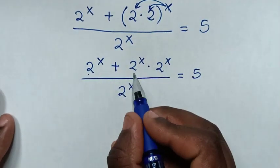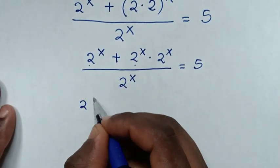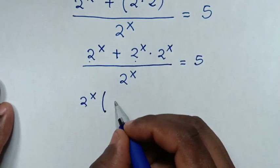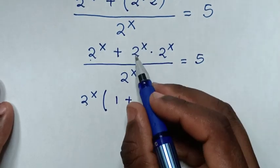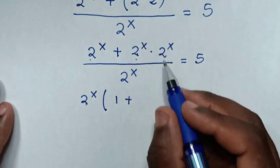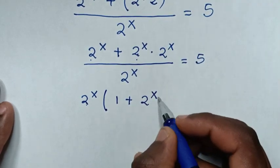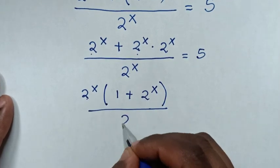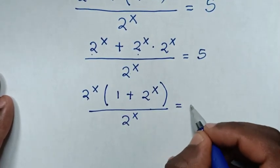Then in here 2 power of x is common, so take 2 power of x out of bracket. This divide by this is 1 plus this divide by this is 1 because they will cancel each other to be 1 times 2 power of x is 2 power of x, then bracket over this 2 power of x is equal to 5.